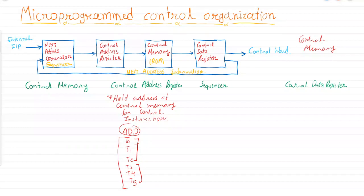As you can see, even a simple ADD instruction consists of operations up to timing signal T5. Each timing signal corresponds to a specific operation, and each operation must be performed in a controlled way. Those details are stored inside the control memory and retrieved step by step from T0 to T5. The control address register holds the address of the control memory for each micro operation.